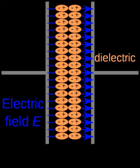The electric susceptibility χe of a dielectric material is a measure of how easily it polarizes in response to an electric field. This, in turn, determines the electric permittivity of the material and thus influences many other phenomena in that medium, from the capacitance of capacitors to the speed of light.